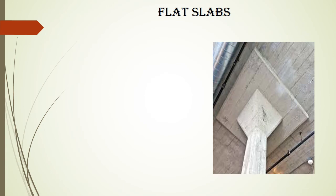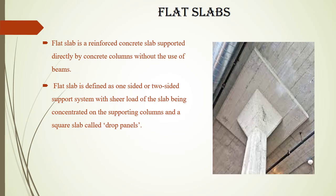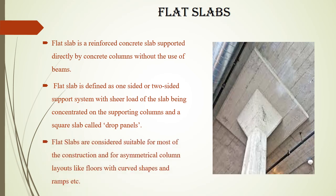The next modern technique is the flat slab. It is a reinforced concrete slab supported directly by concrete columns without the use of beams. The flat slab is defined as a one-sided or two-sided support system, with the shear load of the slab concentrated on the supporting columns and square slabs called drop panels. Flat slabs are suitable for most construction and for asymmetrical column layouts like floors with curved shapes and ramps.